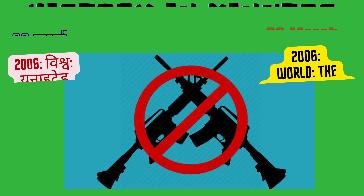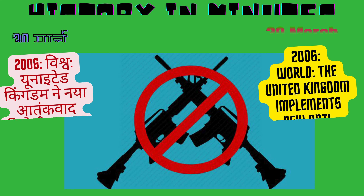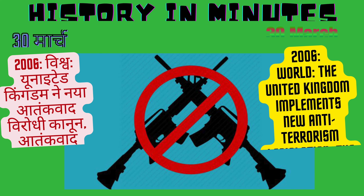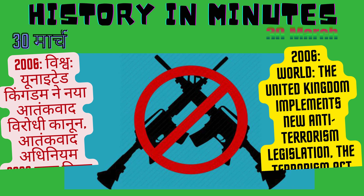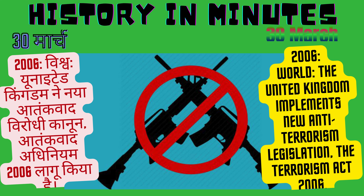2006: World — The United Kingdom implements new anti-terrorism legislation, the Terrorism Act 2006. (Hindi: Vishwa United Kingdom ne naya aatankwaad virodhi kanoon, Aatankwaad Adhiniyam 2006, laagu kiya.)